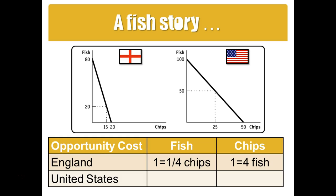In the United States, the opportunity cost of fish is how many chips per fish they're losing. They're losing 50 over 100, so the U.S. is losing one half chip per fish, which means they're losing two fish per chip if they focus on making chips. So now we have enough information to identify who is relatively more efficient at producing both goods, which will inform what each country should focus on.